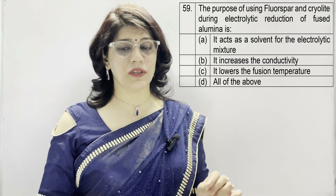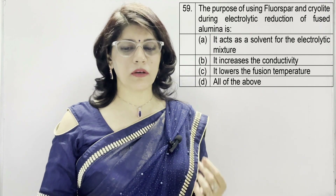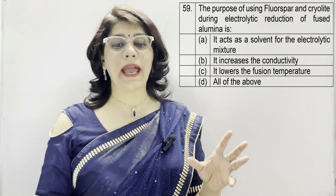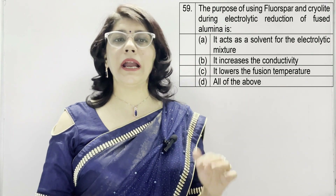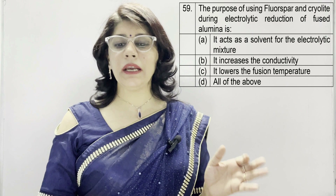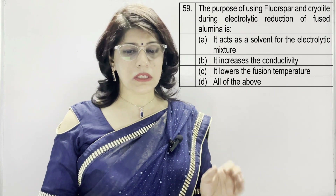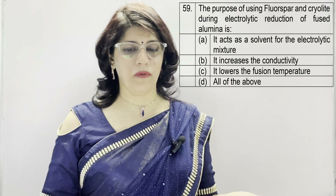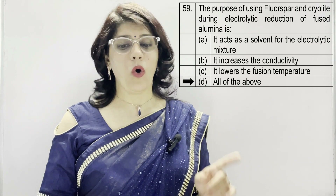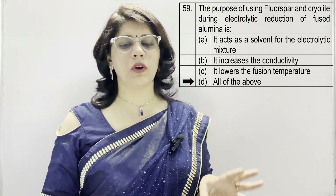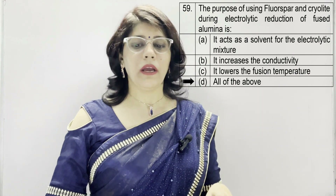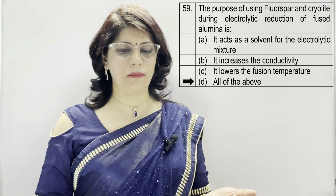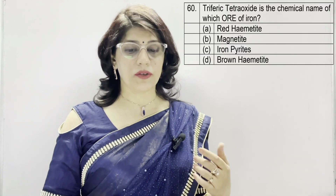In question number 59: the purpose of using fluorite (fluorspar) and cryolite during electrolytic reduction of fused alumina is — A: it acts as a solvent for the electrolytic mixture, B: it increases the conductivity, C: it lowers the fusion temperature, D: all of the above. The correct option is D — all of the above: acts as a solvent, increases conductivity, and lowers the fusion temperature.